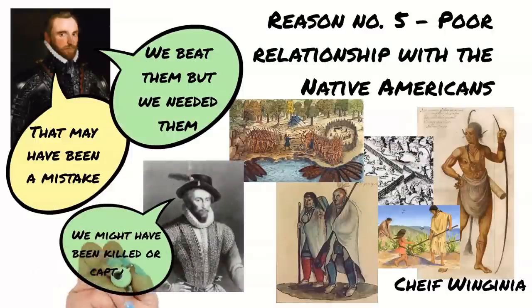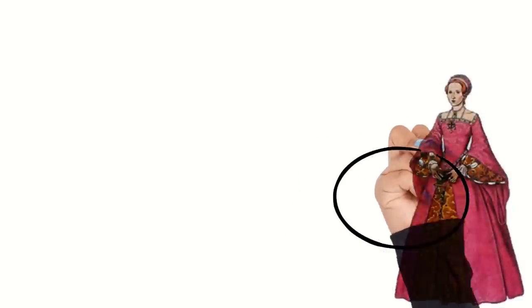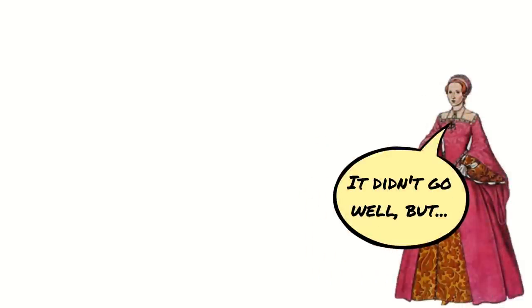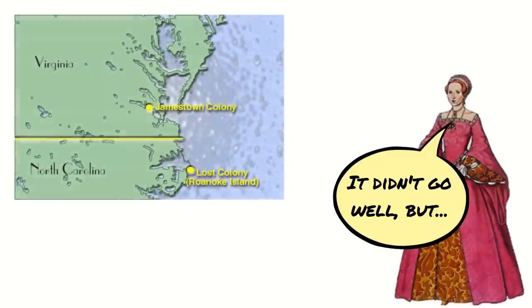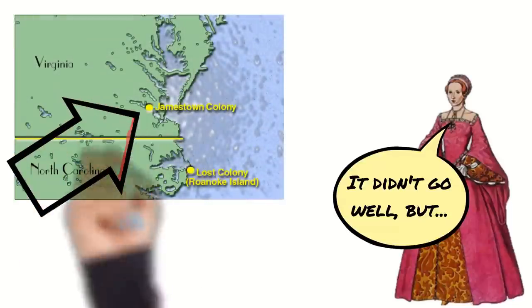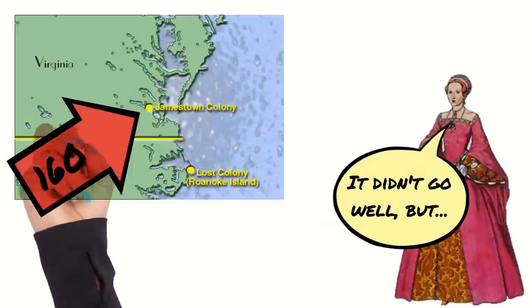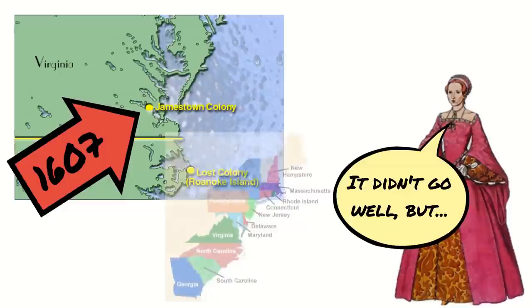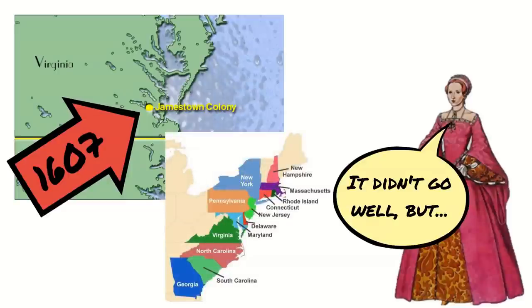It is possible that the second colonists fared no better in their relationship with the indigenous people. One theory is that they were all killed by an attack led by Chief Powhatan; another is that they were enslaved by the locals and assimilated into their population. Although both attempts were spectacularly unsuccessful, lessons were learned and the attempts acted as guides for the first successful English colony in North America — Jamestown, established in 1607. England continued to expand into North America after this and by the end of the 17th century had established 13 self-governing colonies in America.